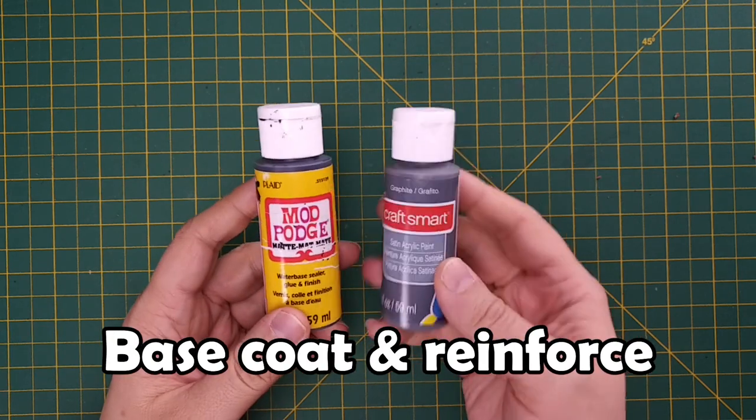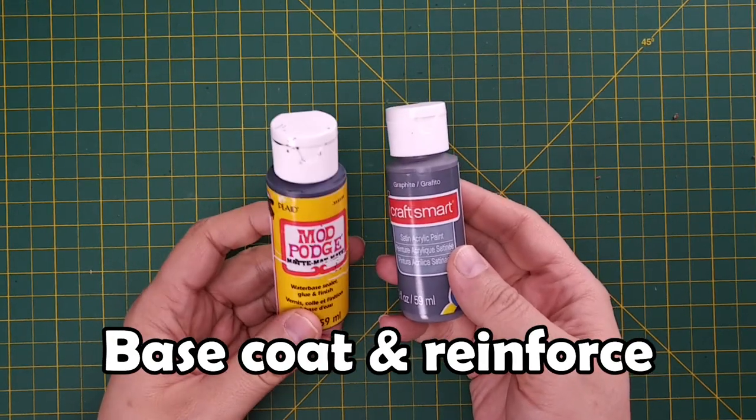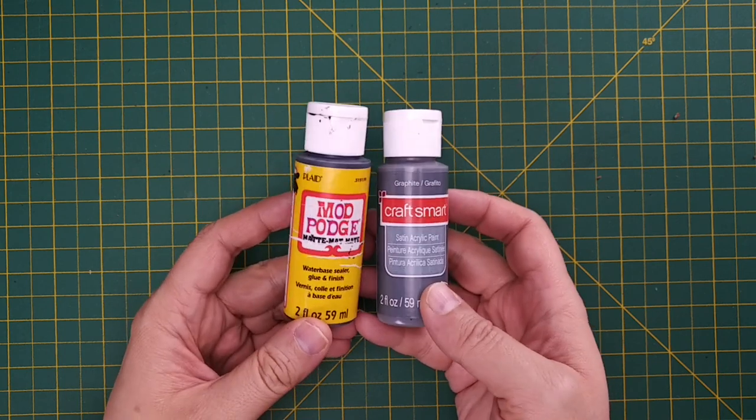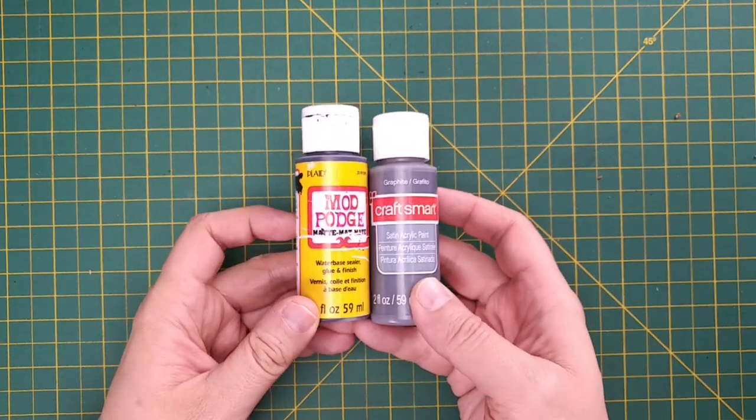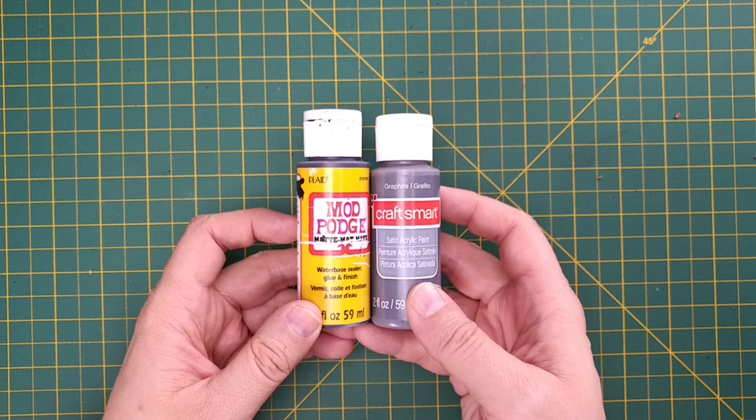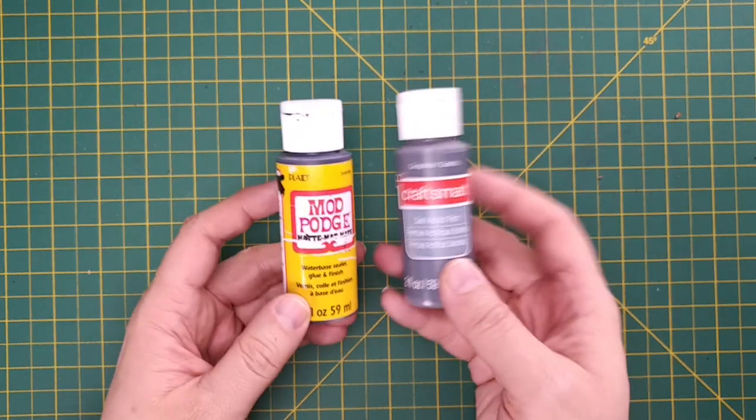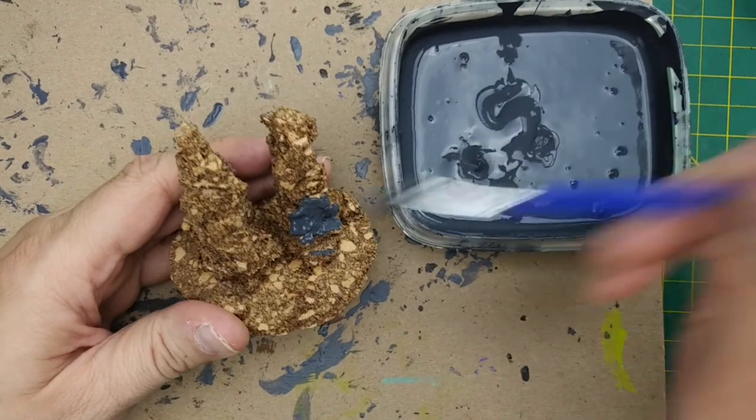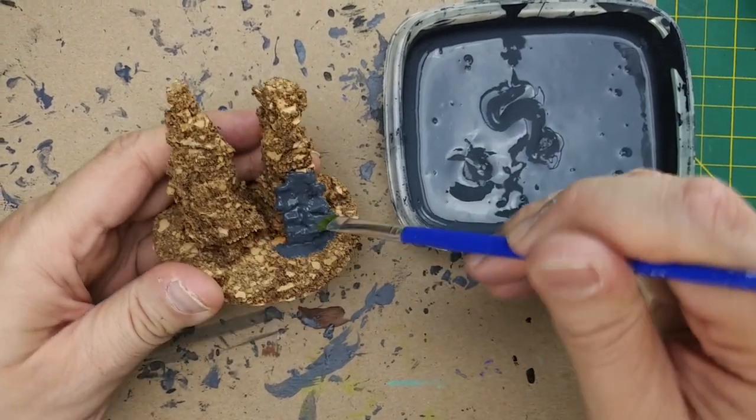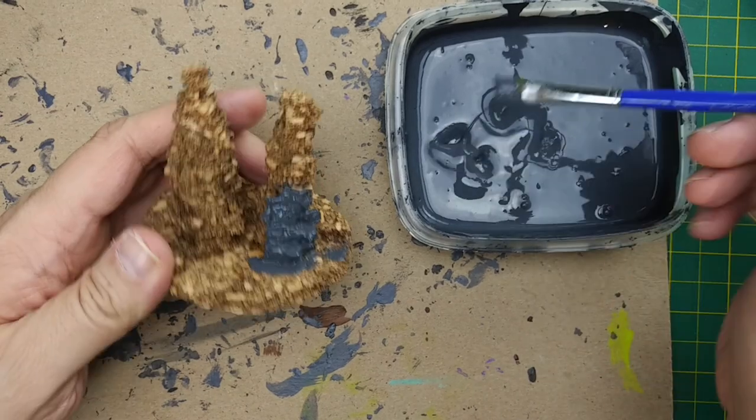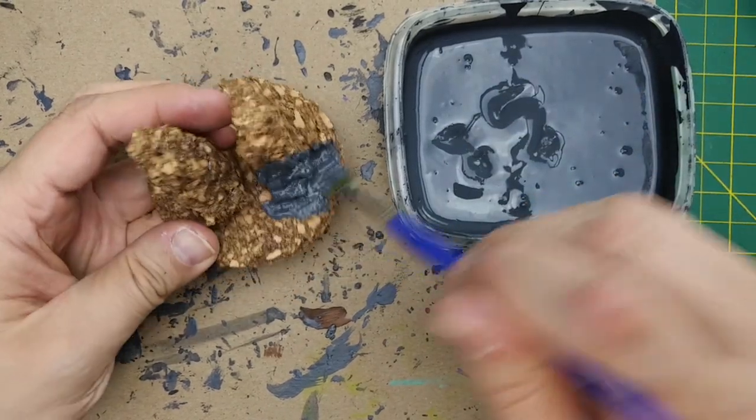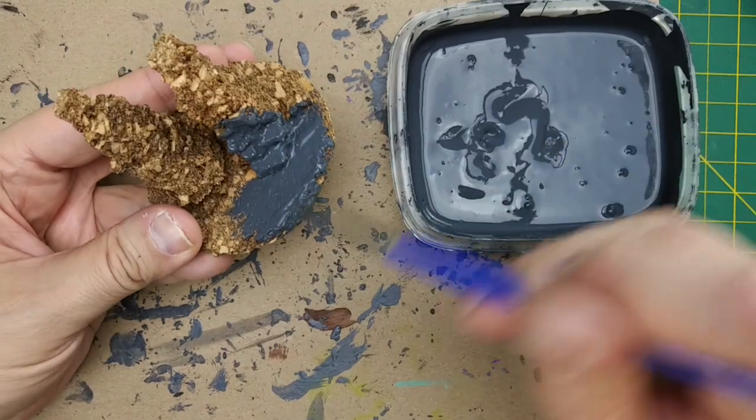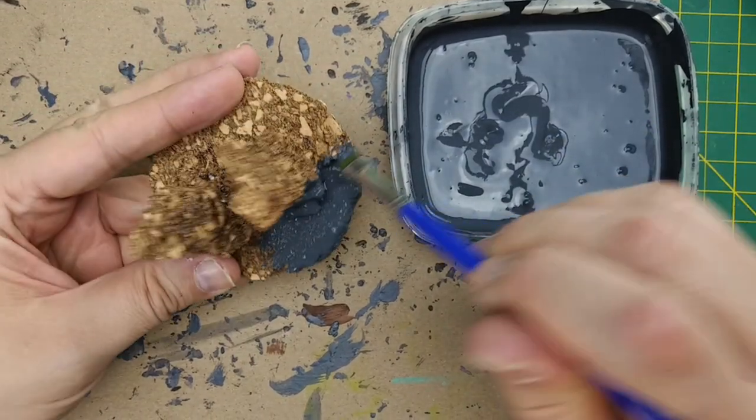We're going to mix some dark gray acrylic paint and some matte mod podge in order to reinforce our cork. This gray is called graphite by Craftsmart, but any dark gray will do. In fact, I think I'm going to add some black paint into our mod podge mixture in order to make it a bit darker. Next, we're going to completely cover our cork structure with our mod podge mixture. Make sure to get the mixture into all the nooks and crannies, but don't glob the paint on. We want to preserve most of the texture that the cork has in order to create a rocky appearance on our build.